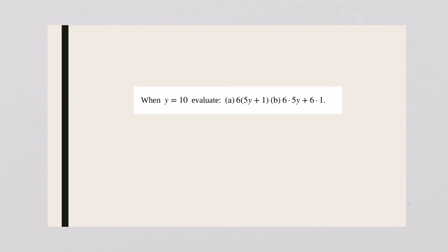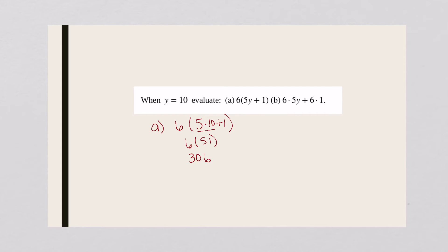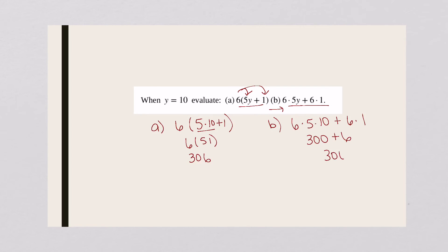For this problem we're going to evaluate when y equals ten. On part a, I'm going to multiply six times five times ten instead of y. Five times ten is fifty, fifty plus one is fifty-one, so I've got six times fifty-one, which is three hundred and six. On part b, they're showing the distributed form: six times five is thirty, thirty times ten is three hundred, six times one is six. It was a little bit easier to multiply the distributed form.